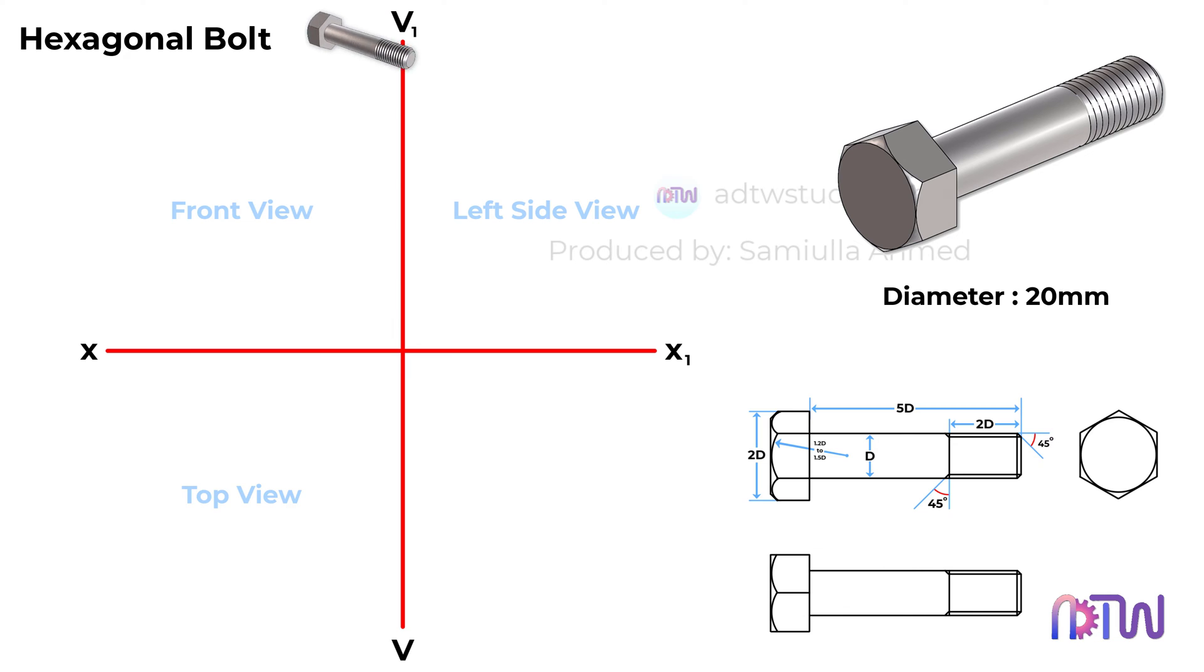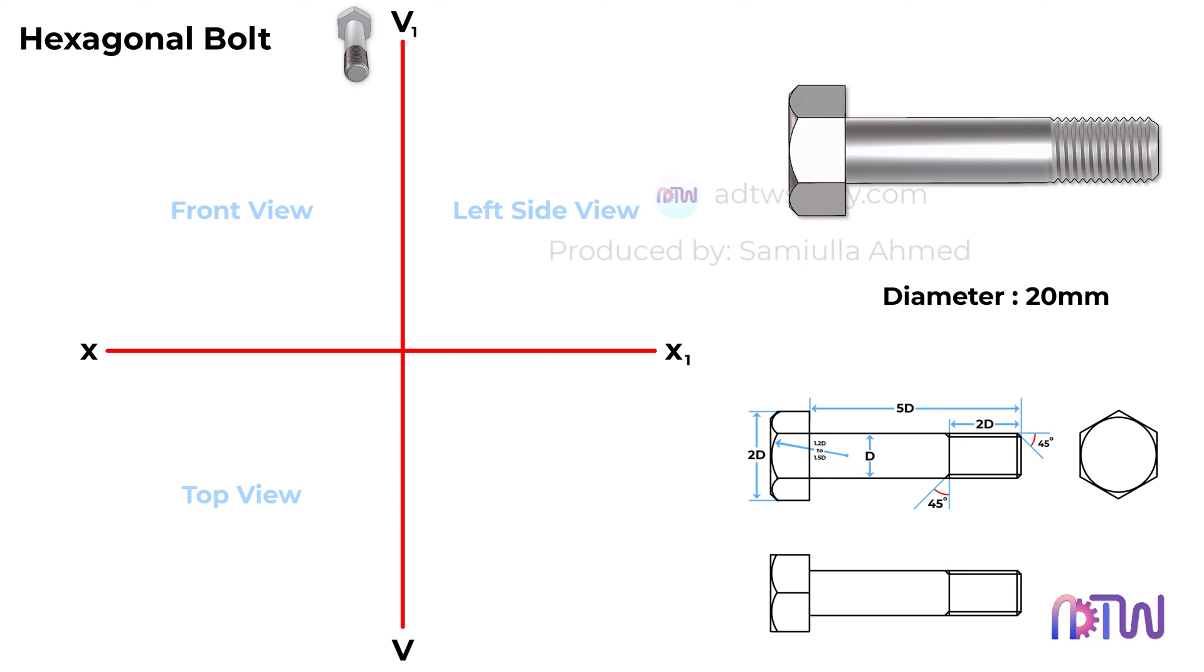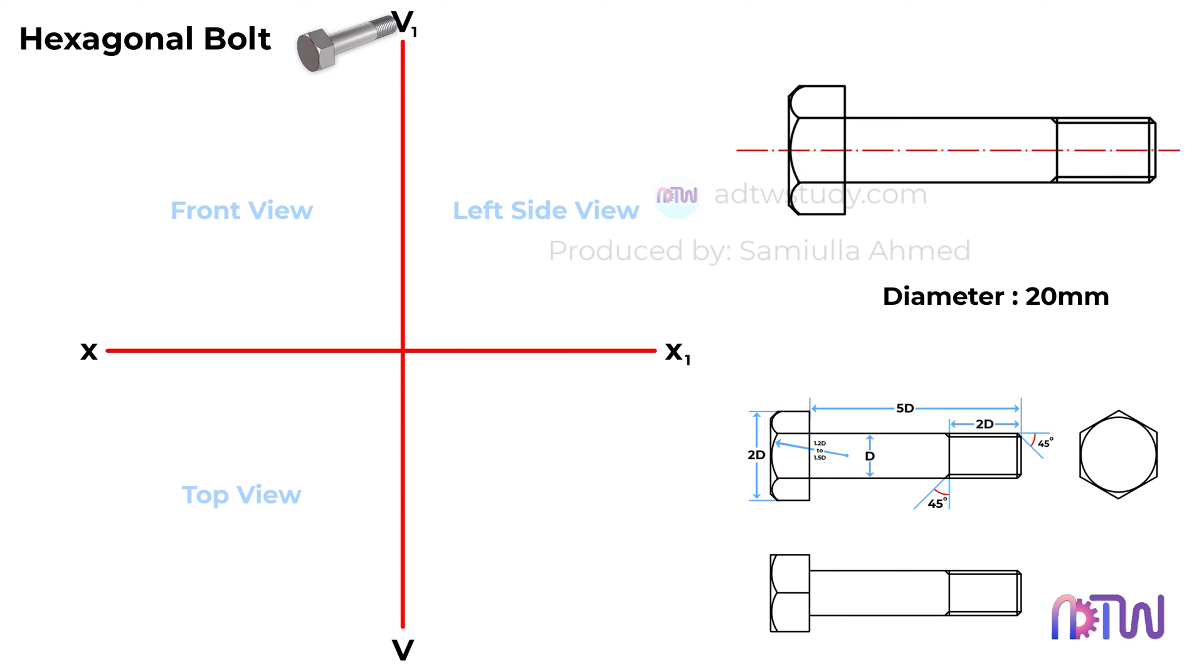Let's initiate the drawing process. Utilizing the first angle method, we commence with the front view. Generally, the bolt's length across corners is twice its nominal diameter, equating to 40mm. The chamfer radius ranges from 1.25 to 1.5 times the diameter. In our case, we'll opt for 1.5 times, resulting in a length of 30mm. The head's thickness spans from 0.8 times D to D. We'll opt for D, amounting to 20mm. This chamfer typically maintains a 30-degree angle.